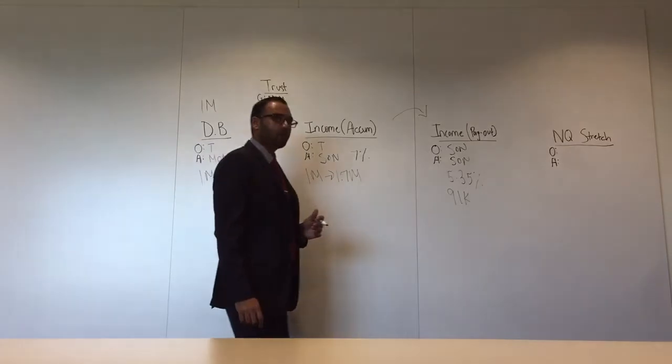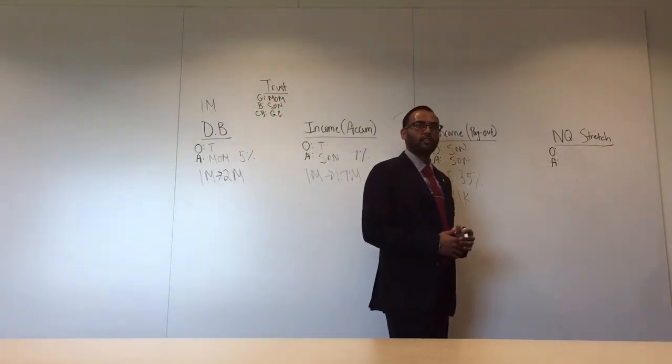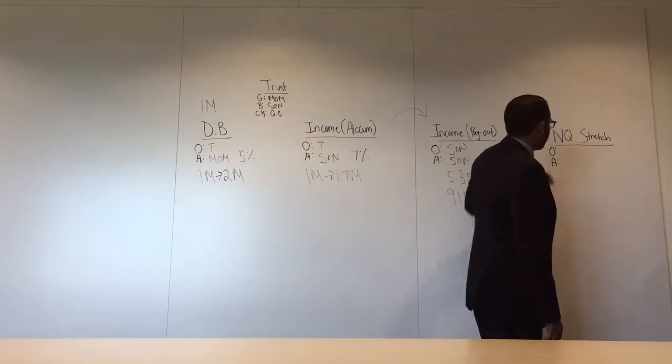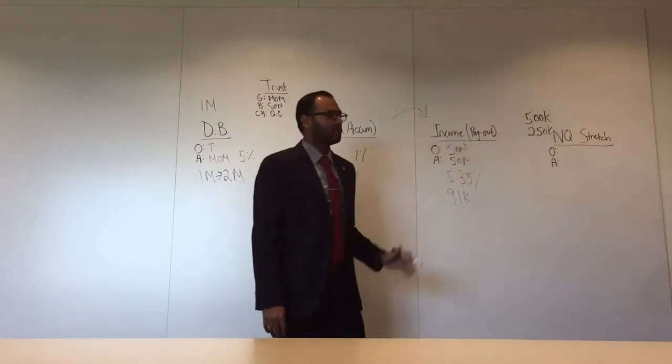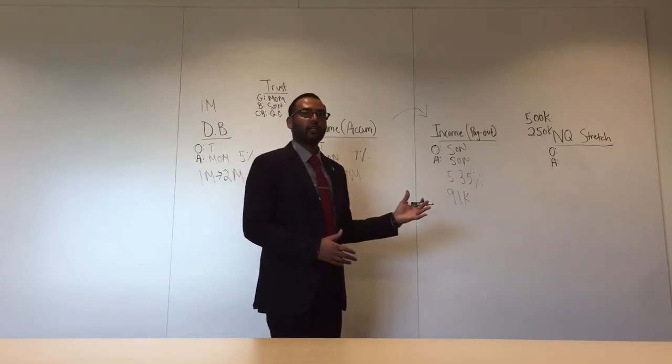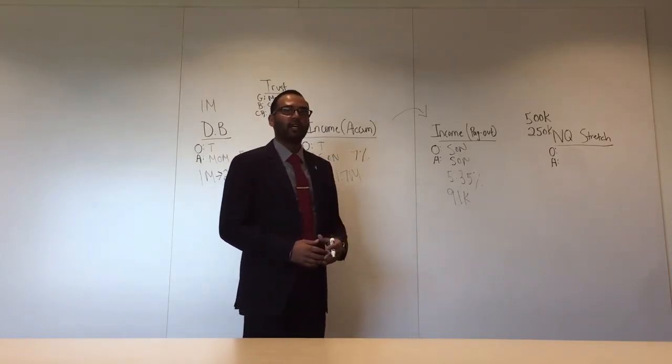Now eventually the son will pass away and what you're able to do is do a non-qualified stretch. Let's assume we have $500,000 left in the contract and $250,000 of that is cost basis. If the clients take a lump sum distribution, they're most likely going to get into a higher tax bracket and face taxes on $250,000 in gains.